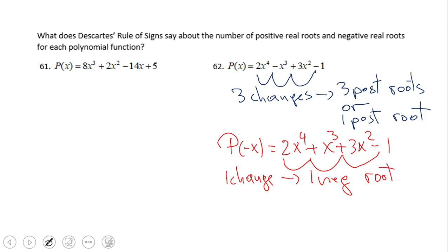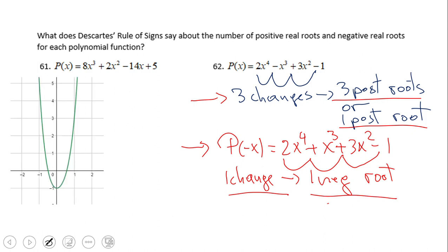If you have this answer for number 62, you did a wonderful job. There are three changes here which gives us these choices: three positive roots or one positive root. Here on P of negative x we have one change, one negative root. So let's double check and we have here one negative, right, and one positive.